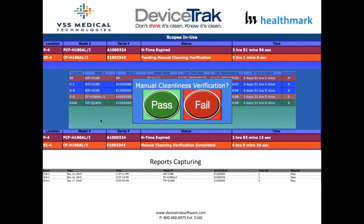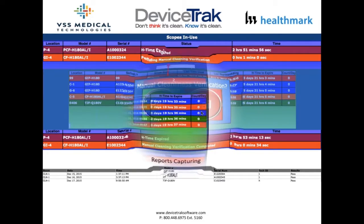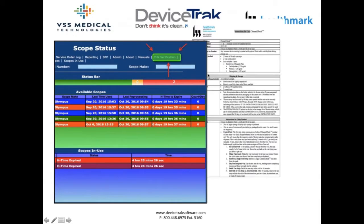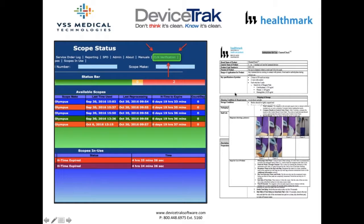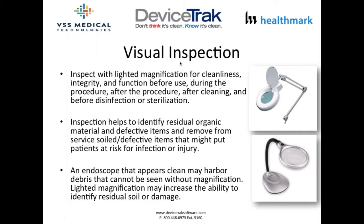DeviceTrack's cleaning verification module captures whether each scope passed or failed. If a scope fails verification, the system prompts return to manual cleaning and the scope cannot advance in the process. All users have the cleaning verification tab available and can reference the products used. Results are captured via reporting.